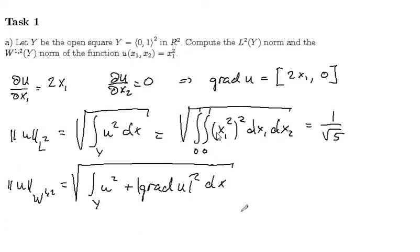We get the anti-derivative of x₁ to the 4th is (1/5)x₁ to the power of 5. Then we insert these limits 0 and 1 and we then get a constant, which we integrate with respect to x₂. And the result is just 1 over the square root of 5.